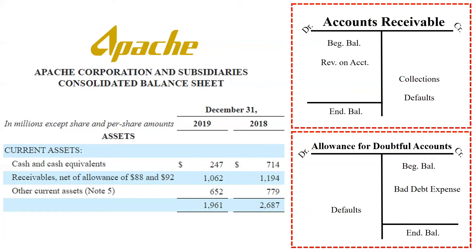We're going to fill out these two t-accounts using only information from Apache's financial statements. Starting with the balance sheet: the beginning balance of accounts receivable is 1194 plus 92. The 1194 is the 2018 net receivable — the amount Apache expects to collect — and we add 92, the amount they do not expect to collect, to get the gross accounts receivable. The end of 2018 is the beginning of 2019.